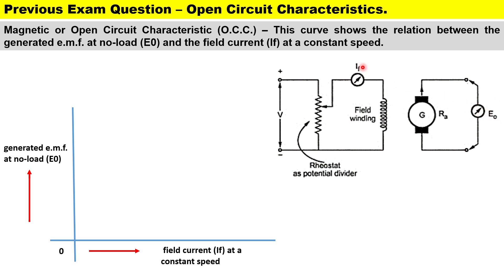Our ammeter will be measuring the field current through the field winding. Now to plot this on a curve to demonstrate the relationship between the EMF and the field current, on our horizontal axis starting from zero we have our field current increasing to the right, and for our generated EMF starting from zero increasing up the vertical axis.